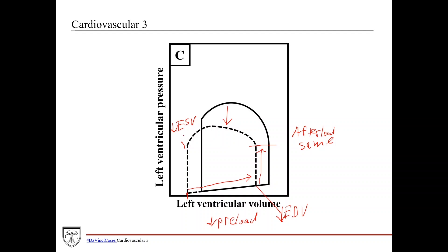You also see a decrease in end systolic volume. What's important is that the end diastolic volume is much more decreased than the end systolic volume. At this point is where the mitral valve would open. As you can see, you had to drop the left ventricular pressure more than usual — from here to here — because the pressure in the left atrium had to become greater than the pressure in the left ventricle to allow for opening of the mitral valve.